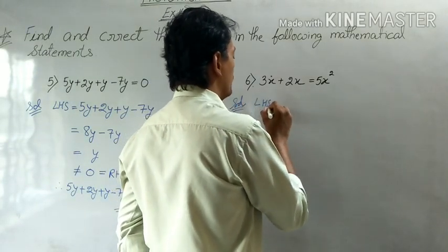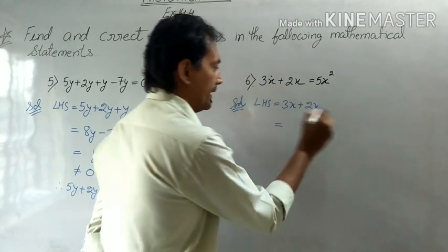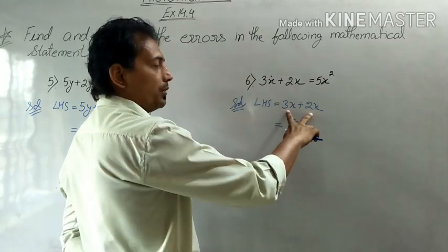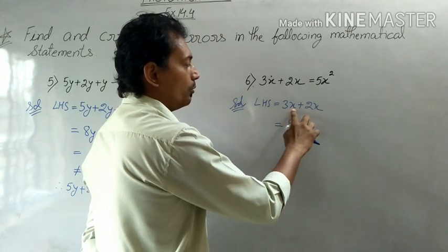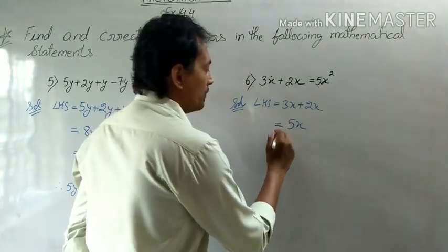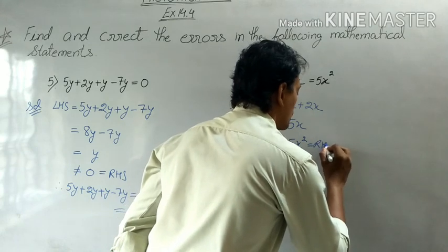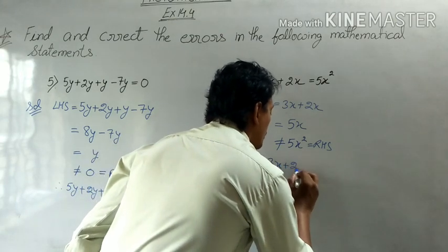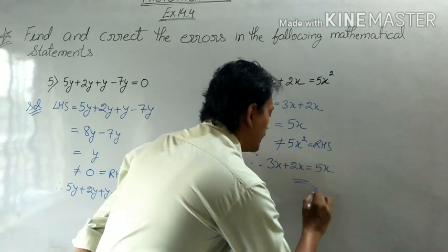The next statement has LHS equal to 3x plus 2x. Both are like terms and can be added to give 5x. Remember: when we add like terms, the degree of the variable remains the same — the degree only changes in multiplication or division. So 5x is not equal to the RHS which is 5x squared. The correct statement is: 3x plus 2x = 5x.